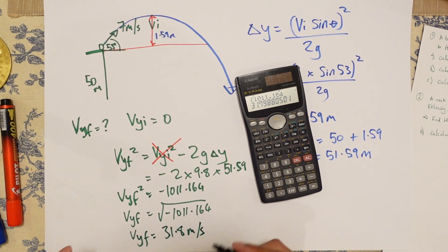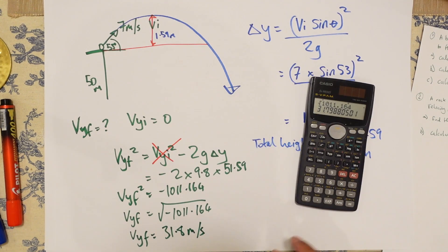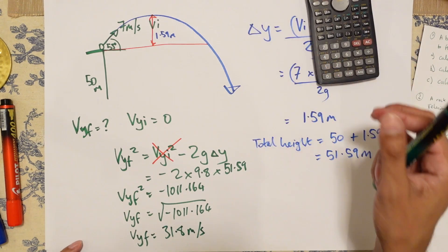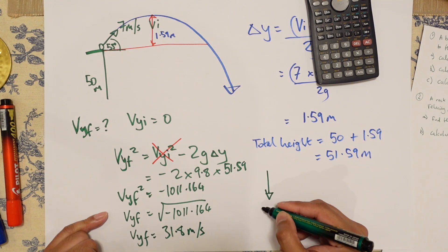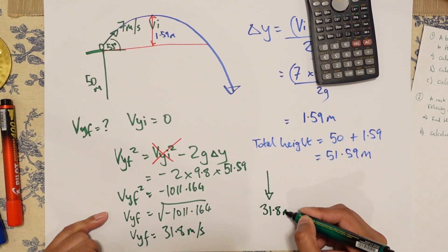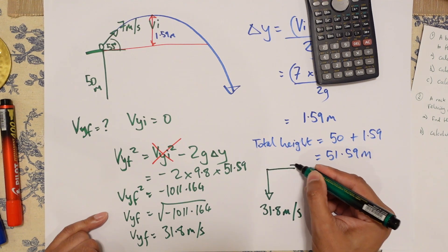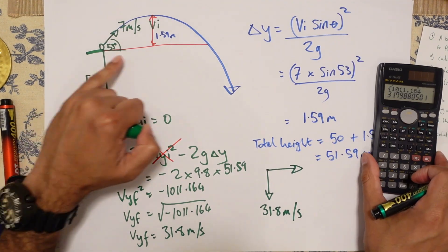Now, this is not the final answer, because this is just for the Y direction. Basically, we've got a situation where we've got 31.8 meters per second downwards, but we've also got VX.